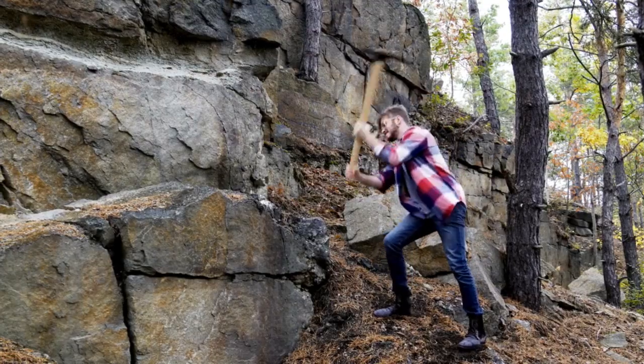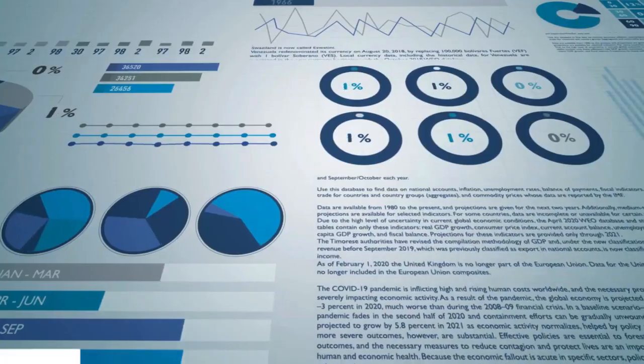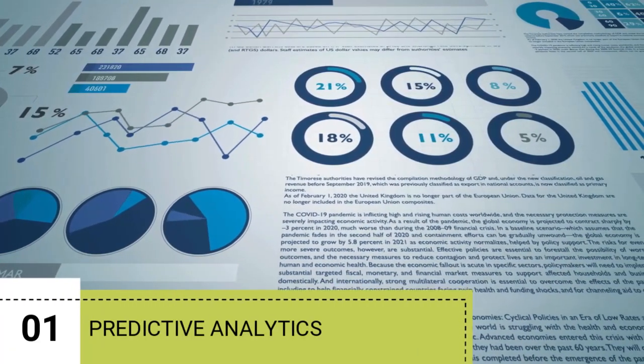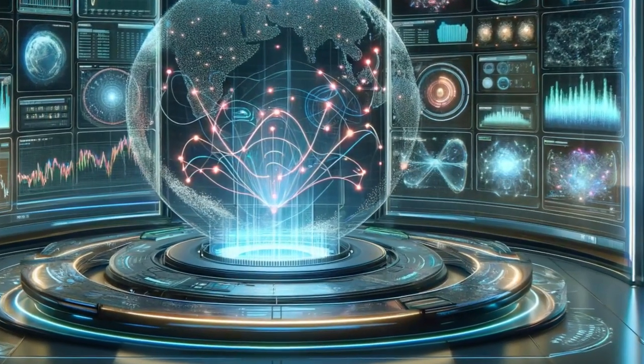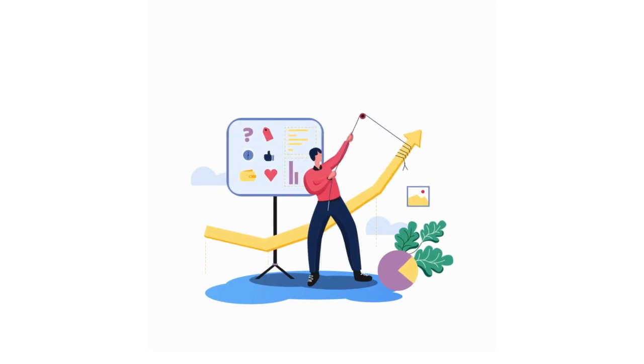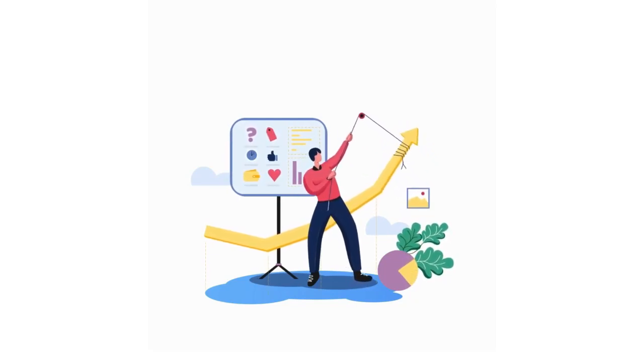Not using AI in real estate lead generation will just make it less effective and efficient. Now you're about to learn the six ways AI can transform real estate lead generation. When AI algorithms analyze vast amounts of data to predict which leads are most likely to convert, that's predictive analysis — for example, when an AI system analyzes past sales data and predicts that newly married couples are currently the most likely to buy in a certain neighborhood.